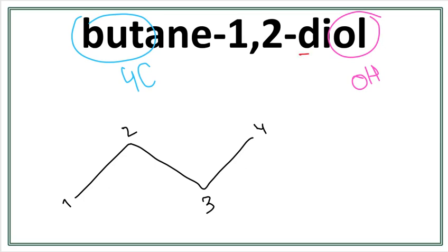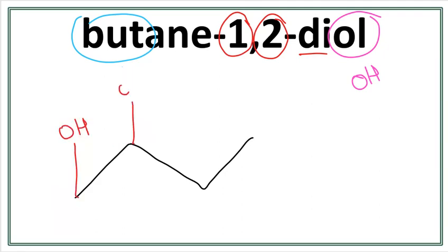Now we have a diol, meaning we have two OHs attached. One of them is on the first carbon and the other one is on the second carbon. So we have an OH here and an OH here. Let's get rid of these numbers and attach the OHs. This is the structure for butane-1,2-diol.